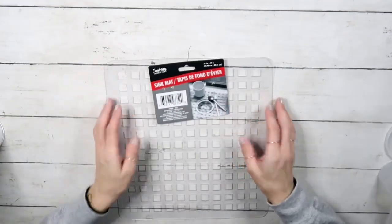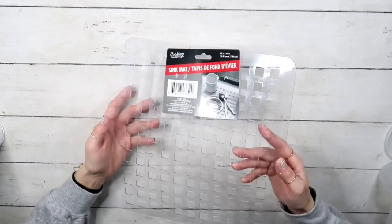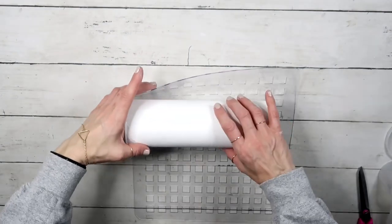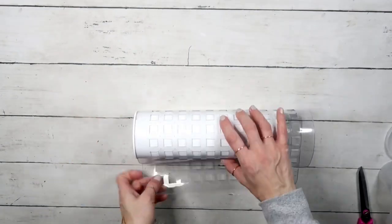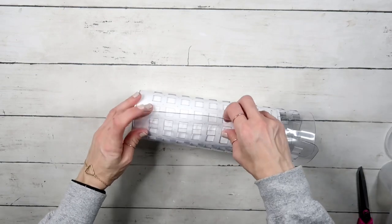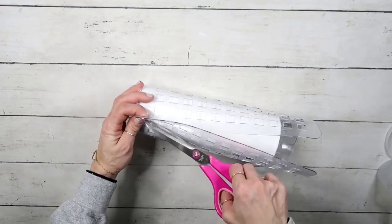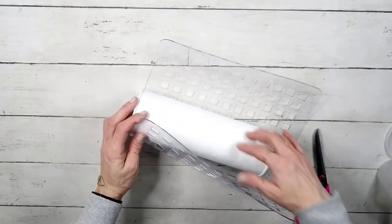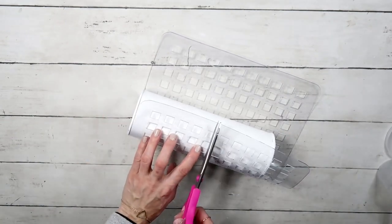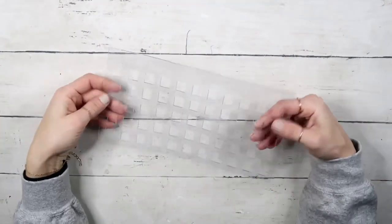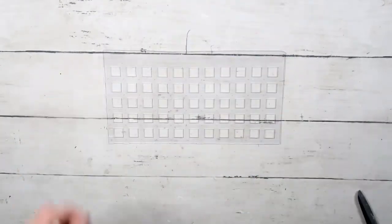After everything was painted and dried, I'm gonna take this mat that goes inside your sink, a drying mat, and I am going to wrap it around my cylinder container and measure how much I need to cut so they don't overlap at all. The height is approximately half of the cylinder size.